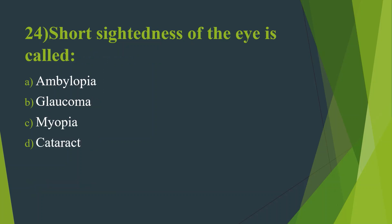Twenty-fourth question: Short-sightedness of the eye is called — Option A, Amblyopia. Option B, Glaucoma. Option C, Myopia. Option D, Cataract. Answer is Option C, Myopia.